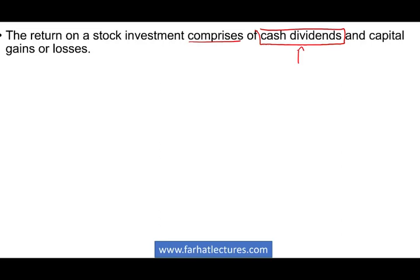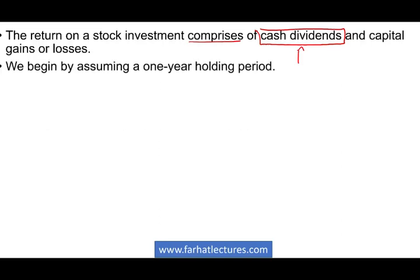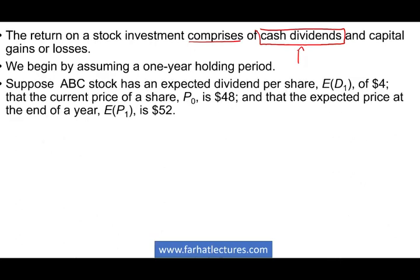Let's try to compute this return on investment. Assume a one-year holding period, and let's assume we have an ABC stock with an expected dividend per share — the expected D1 — of $4. Usually companies will declare their expected dividend, or they would have a growth rate where you can compute this expected dividend. So this is the cash dividend that's expected. The current price, P0, is $48. The expected price P1, which we don't know for certain, is $52.